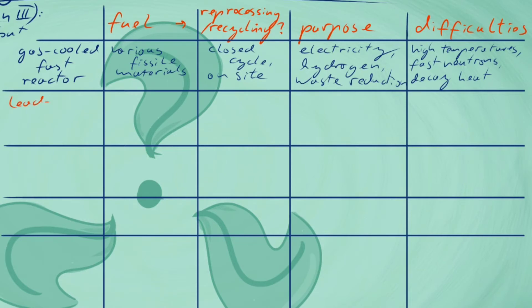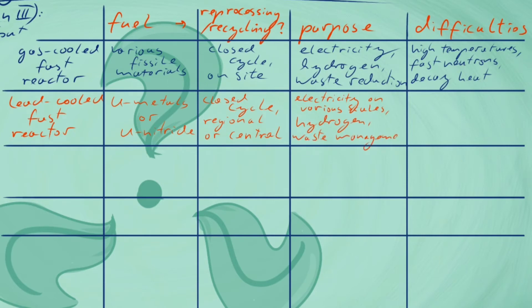Lead-cooled fast reactors are cooled by liquid metal at exit temperatures of 550 to 800 degrees Celsius. This reactor could be built in a various range of sizes, with the smaller ones offering a long core life of 10 to 20 years, making this an attractive option for countries with small energy demand and few resources due to the little maintenance required.